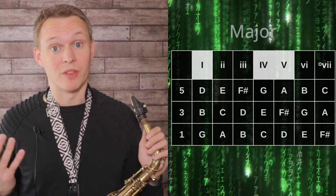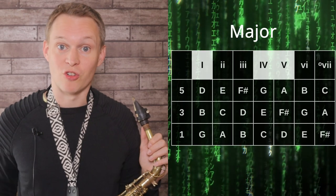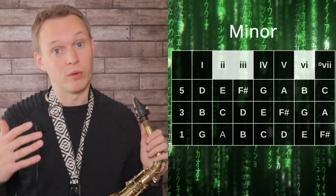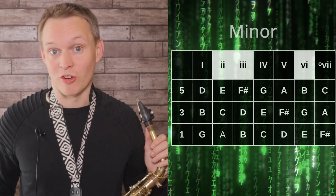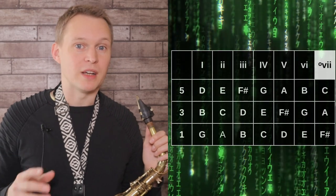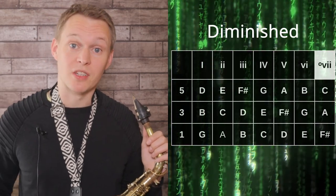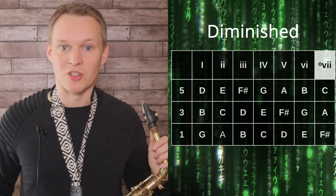You'll notice that number one, four and five are with capital letters, that's because they're major triads, and two, three and six are with lowercase and that's because they're minor triads. Number seven is a bit different, it's got that little circle that's a diminished symbol, that's because that's known as a diminished triad.